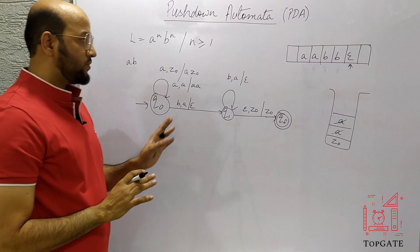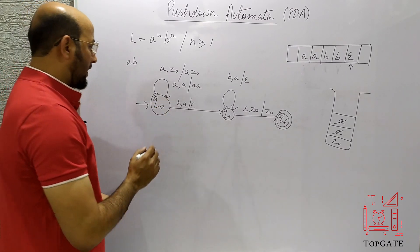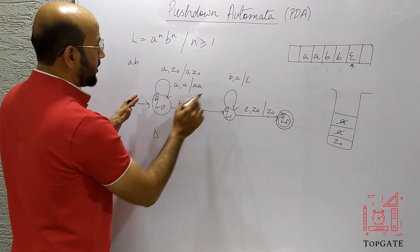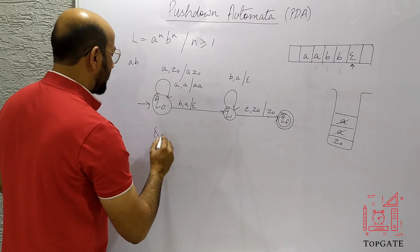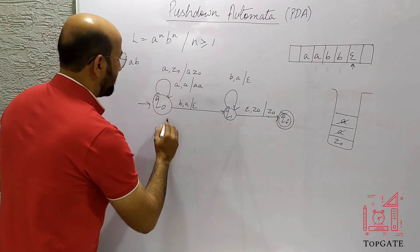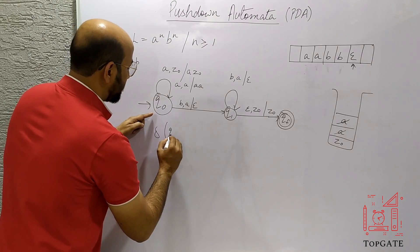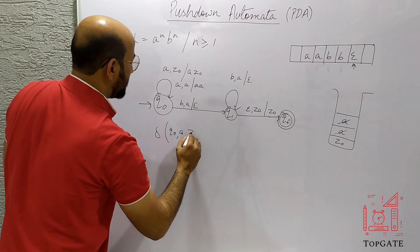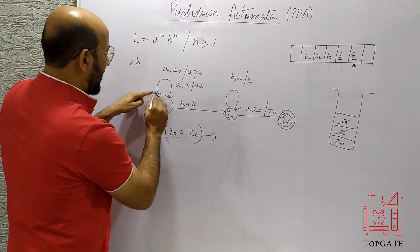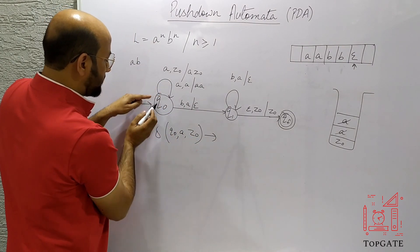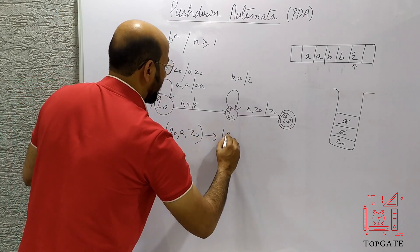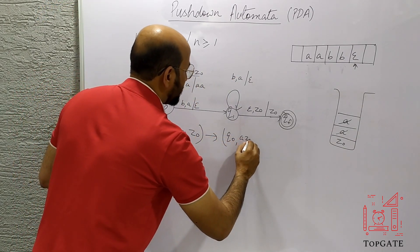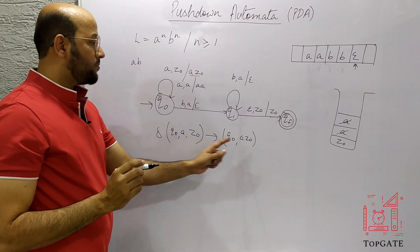Now let us write the transition function for all five transitions. Transition 1: delta(Q0, A, Z0) = (Q0, AZ0) — started from Q0, element to process is A, top stack element is Z0, we return to Q0 with AZ0, showing the push operation. Transition 2: delta(Q0, A, A) = (Q0, AA) — started from Q0, element to read is A, top stack element is A, we return to Q0 with AA, again showing the push operation.